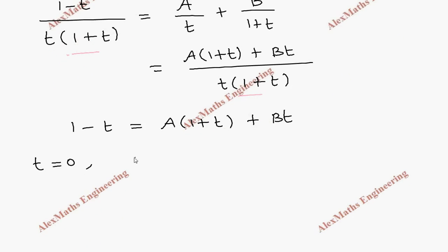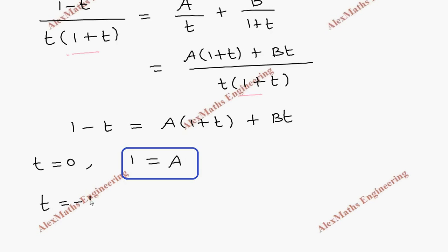Let's take t equal to 0, so the equation becomes 1 equal to A — the other part becomes 0. So A equals 1. In the same way, taking t equal to minus 1, this side becomes 2 and the A term becomes 0, giving minus B equal to 2, so B equals minus 2.